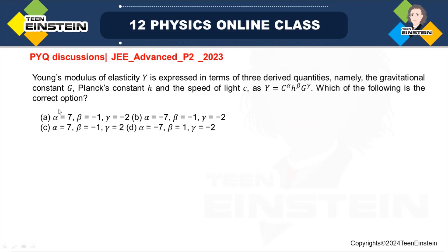Which of the following is the correct option? Here, the dimensional formula is given as Y equals C to the power alpha, h to the power beta, and G to the power gamma. Out of the four options, you have to find the correct combination of alpha, beta, and gamma values such that you get a correct dimensional formula for Young's modulus Y. To solve this kind of problem, you need to write down the individual dimensional formula for each derived quantity, and get the equations in terms of alpha, beta, and gamma, and try to solve them.